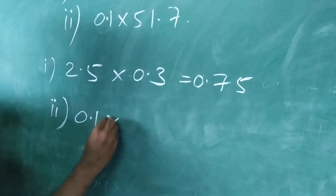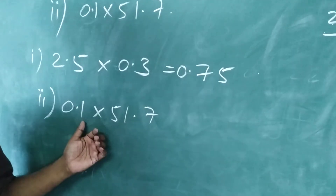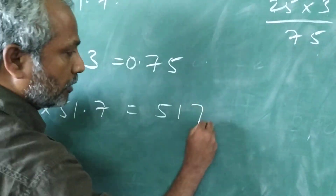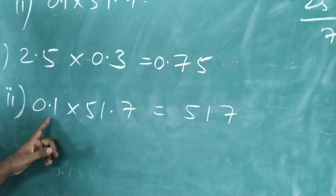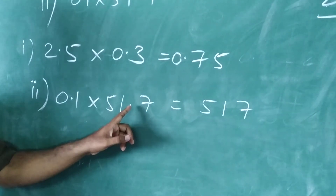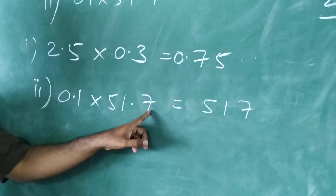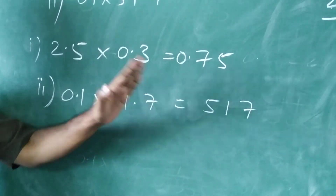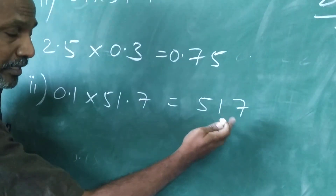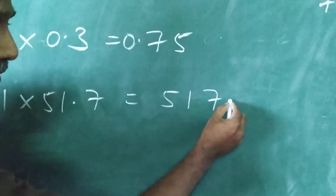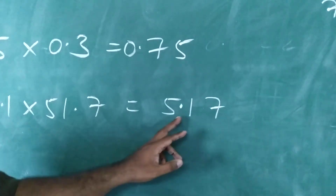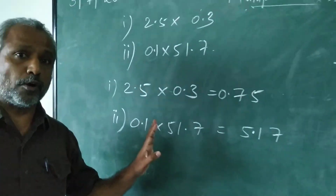Second example: 0.1 into 51.7. Directly multiply 1 into 517, which gives 517. Now look at the two values: one has one decimal place after the decimal, and the second also has one decimal place after the decimal. That means in the result, take the decimal from right to left two places. So the result will be 5.17.